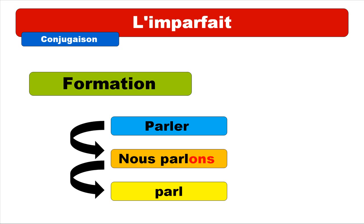So we've got a regular verb: parler — parler means to speak or to talk. At the present form you have 'nous parlons'. The idea is to take away the ending '-ons', and if you take that away then you get 'parle'. This will be the stem we use to construct and build the imparfait.